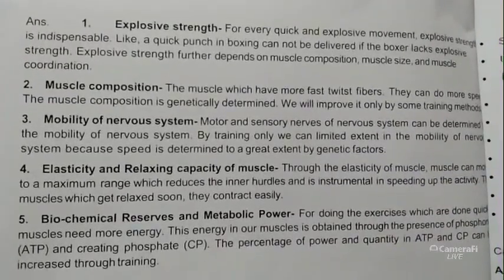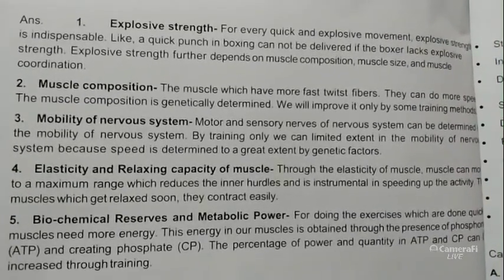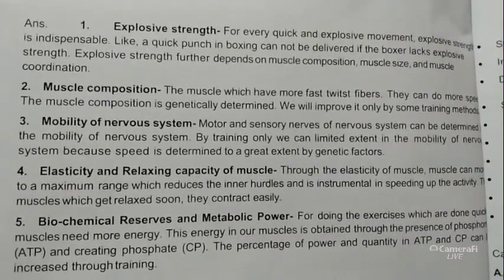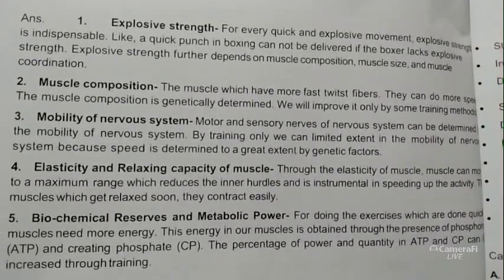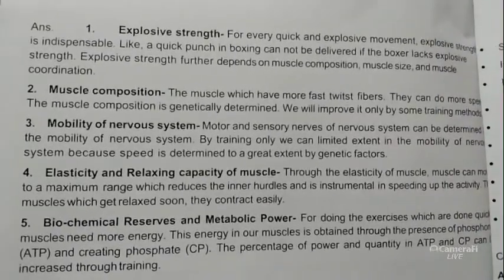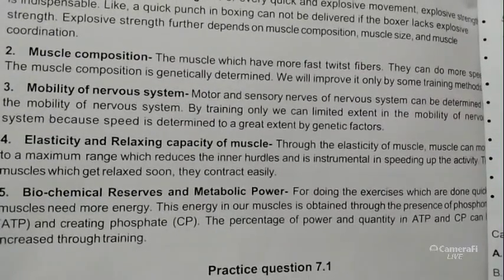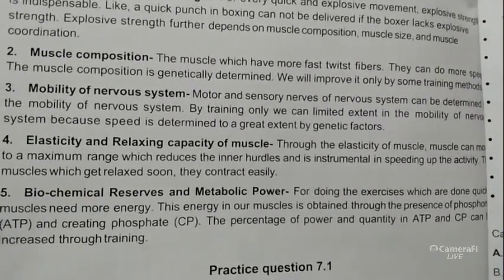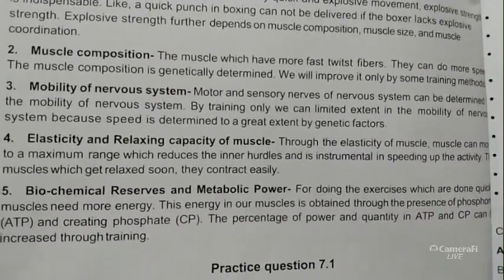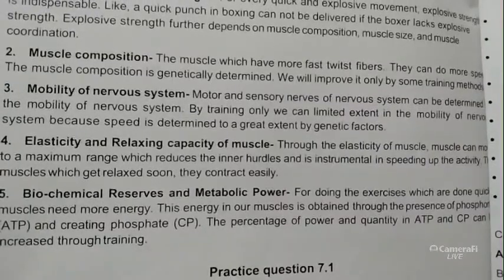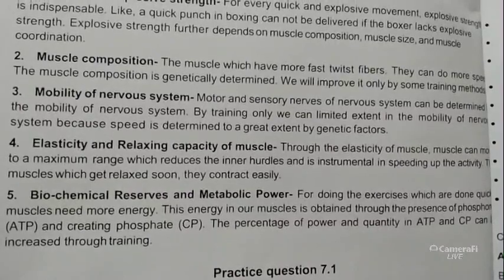Number two, muscle composition: muscles which have more fast twitch fibers can perform more speedy actions. Muscle composition is genetically determined; it can be improved only by certain training methods. Number three, mobility of the nervous system: motor and sensory nerves of the nervous system can be trained to a limited extent, because speed is determined to a great extent by genetic factors.